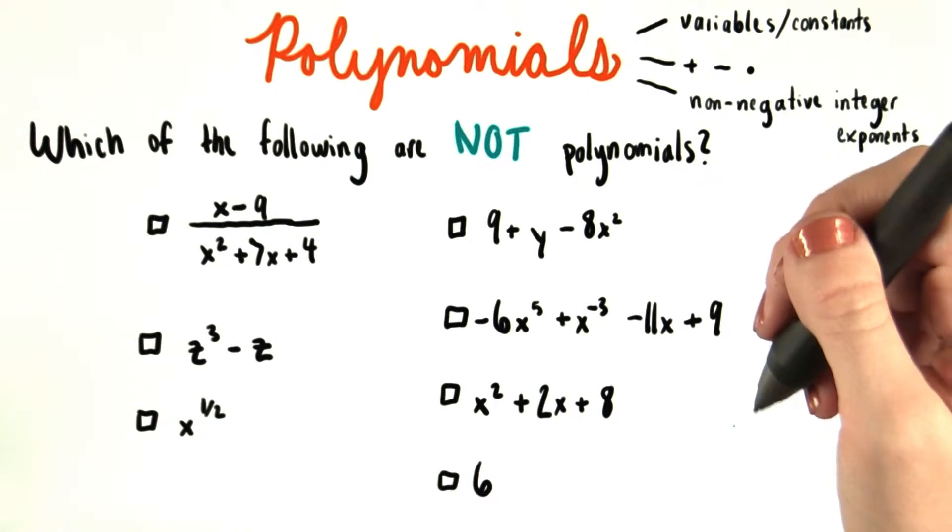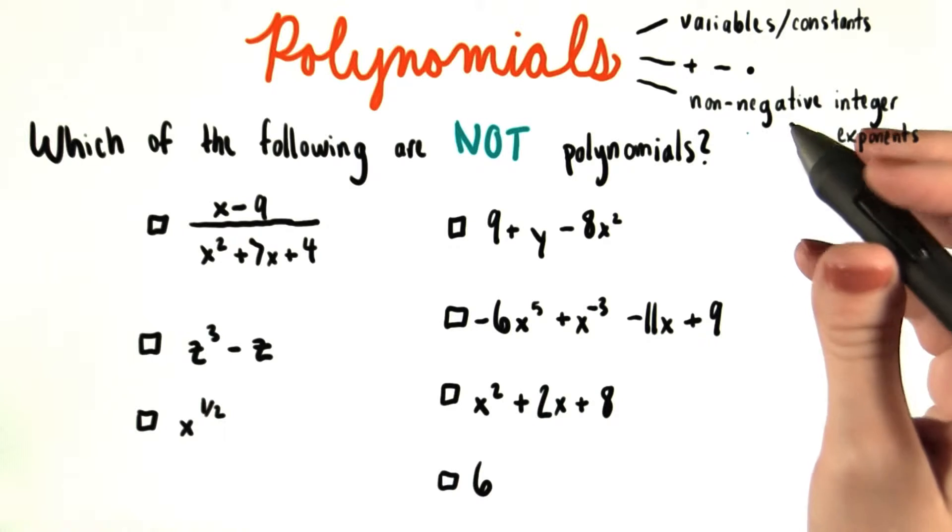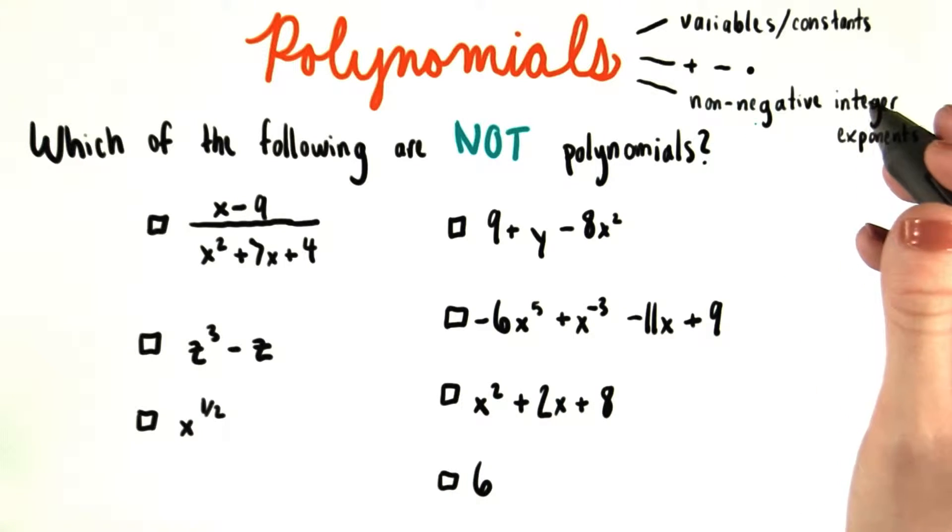Three of these are not polynomials, but the rest of them are. We learned that a polynomial is an expression that only uses addition, subtraction, and multiplication to combine constants and variables.